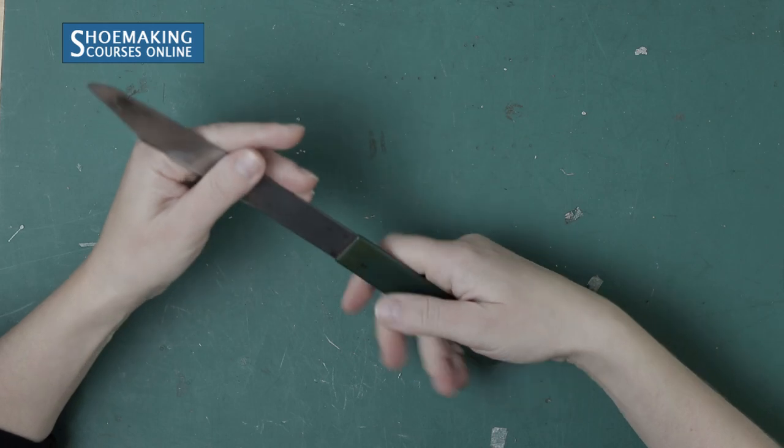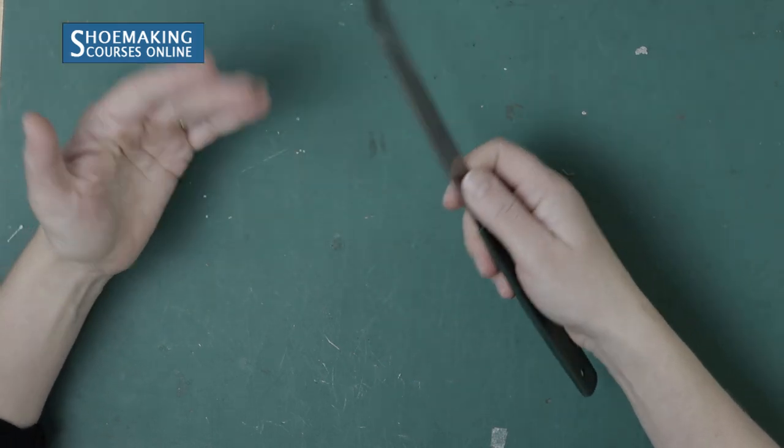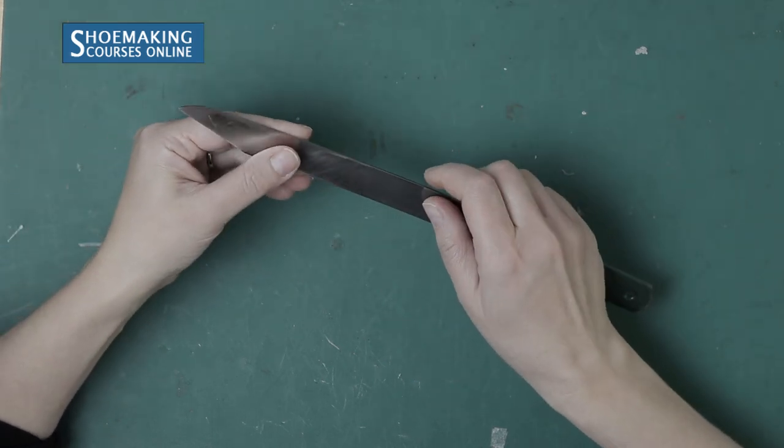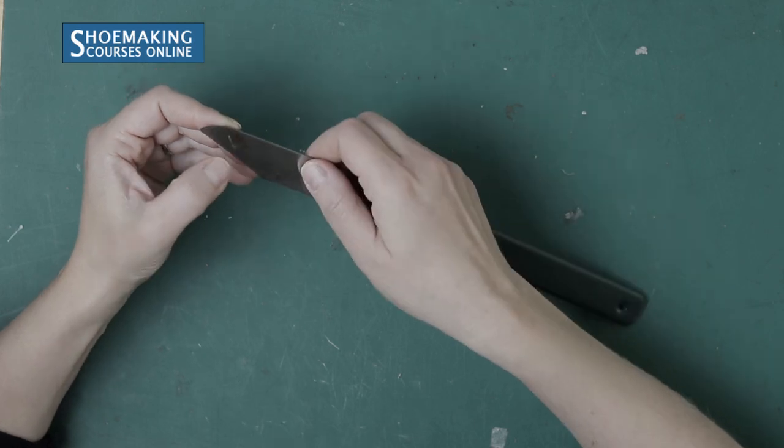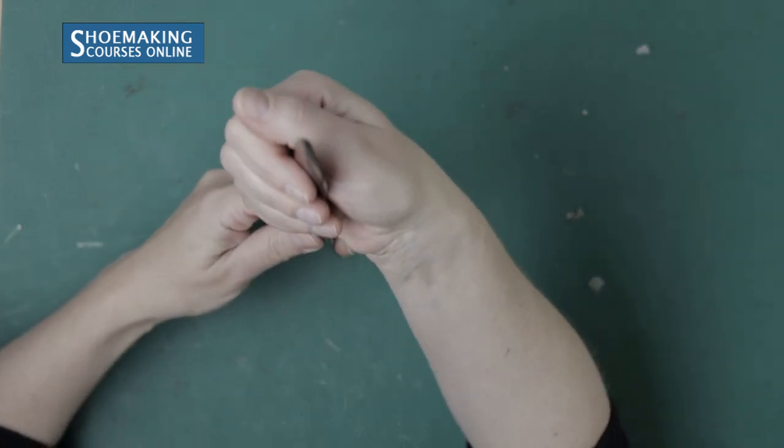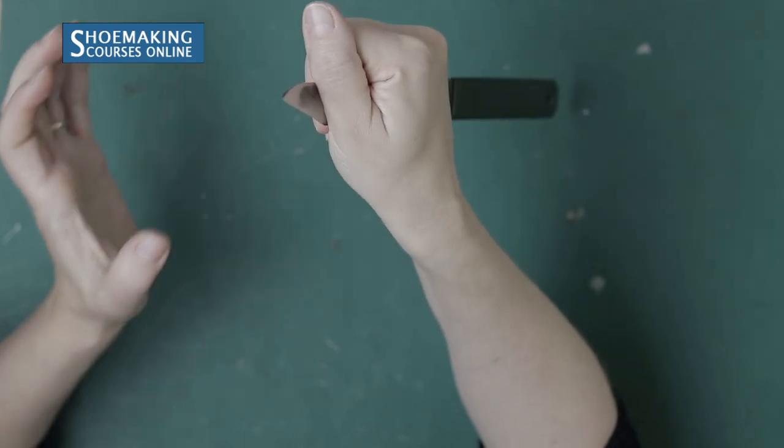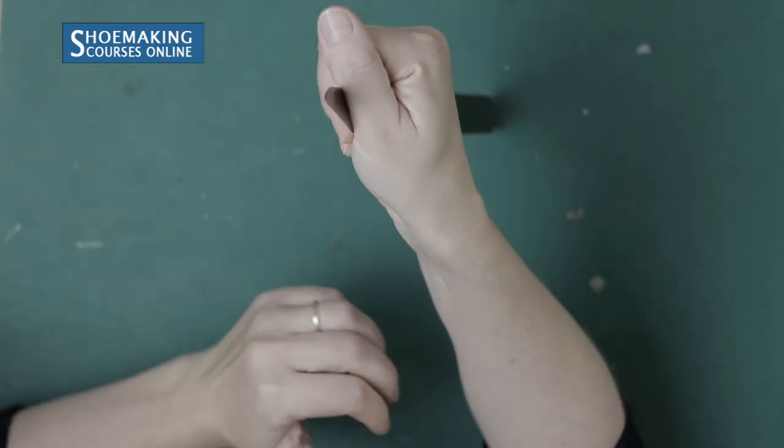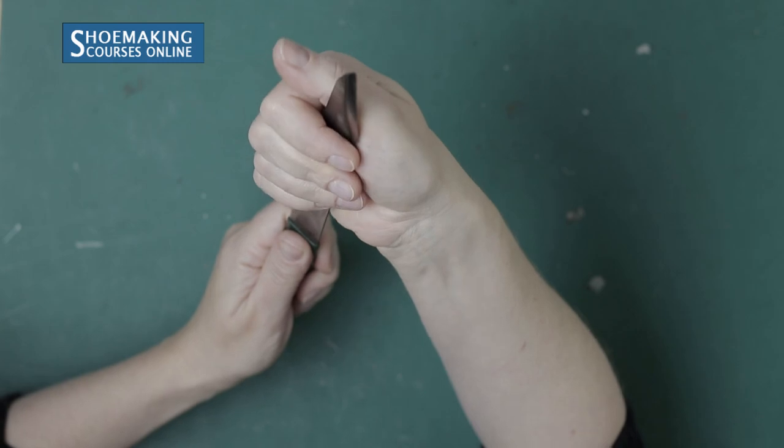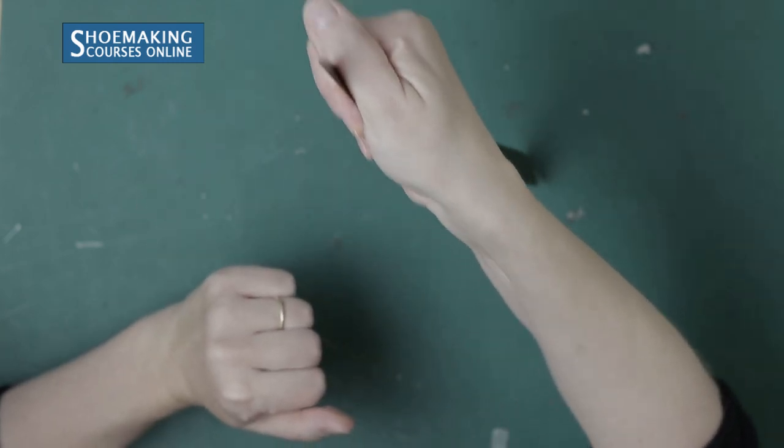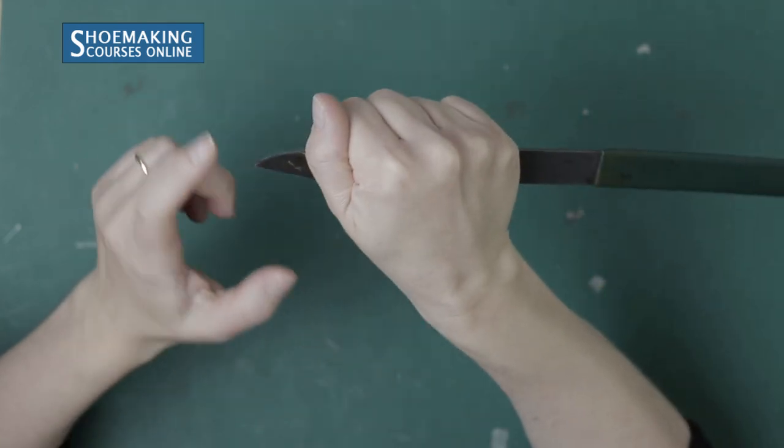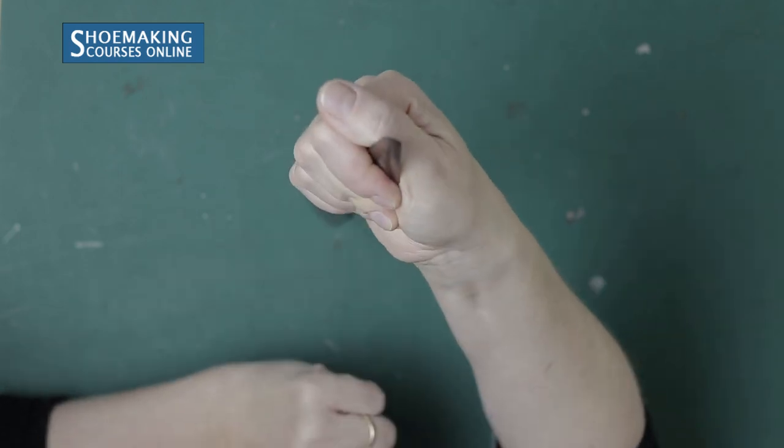Now working with this knife, you also can trim extra leather. You can trim extra leather when you build heels. To cut extra leather that extends from the shoe when you build heels, you should keep this knife like this and cut extra leather. When you hold it like this, you will not cut yourself and you will not scratch the upper.